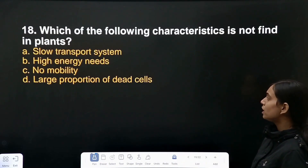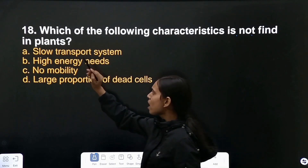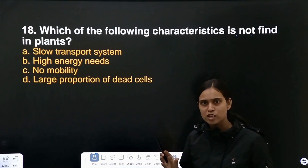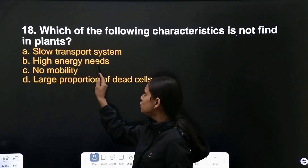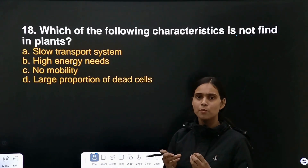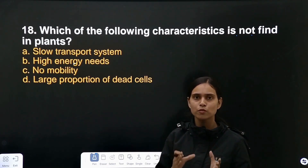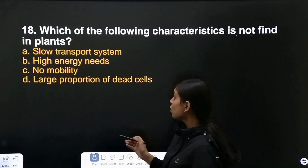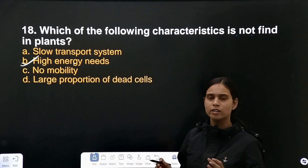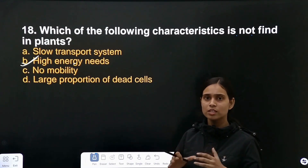Question number 18: which of the following characteristics is not found in plants? Plants have a slow transport system. But plants do not need high energy because they do not need to move from one place to another. So 'high energy needs' is not a characteristic of plants.